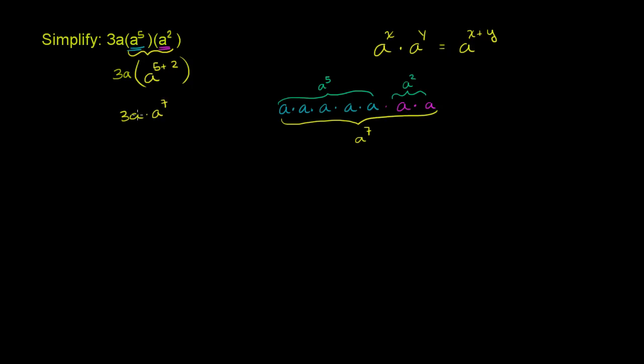Now you might say, how do I apply the property over here? What is the exponent on the a? Remember, if I just have an a, this is equivalent to a to the first power. So I can rewrite 3a as 3 times a to the first power, and now it's a little bit clearer.